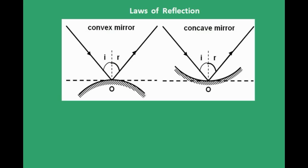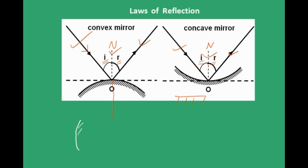There are some laws of reflection. The first law is that the angle of incidence is equal to the angle of reflection. The normal is the perpendicular to the surface — for a spherical surface, it is the line joining the center to the point of incidence. The incident ray makes an angle with the normal called the angle of incidence, and the reflected ray makes an angle with the normal called the angle of reflection. The second law is that the incident ray, the normal, and the reflected ray all lie in the same plane. This holds for both spherical and plane mirrors.